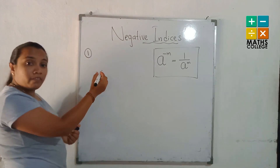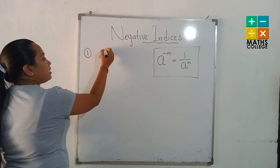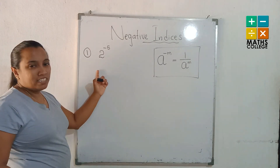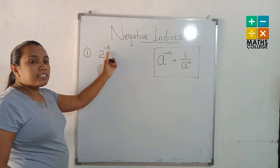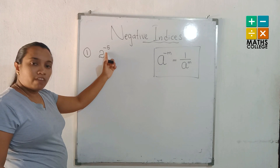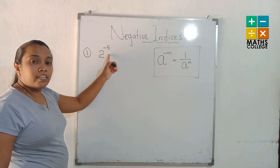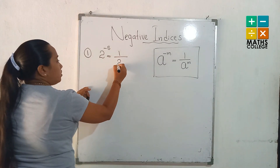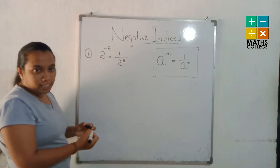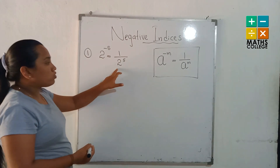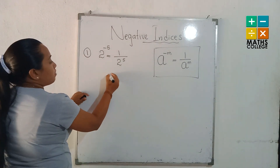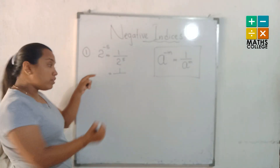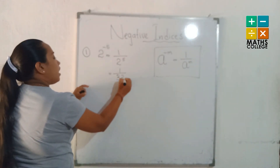Now, solving some questions by applying negative indices. How to find the value of 2 to the power negative 5? With a negative index, we cannot find the value directly. Convert it to positive: 2 goes to the denominator, giving 1 over 2 to the power 5. We know that 2 to the power 5 is 32, so the answer is 1 over 32.